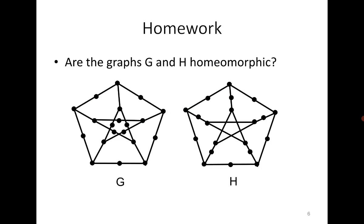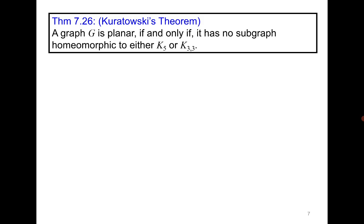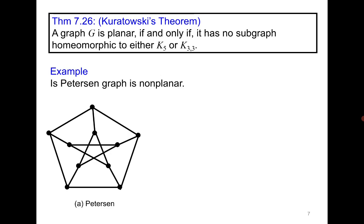This is an exercise you must try yourself. Now we move to the most important result of this chapter: Kuratowski's theorem. It states that a graph is planar if and only if it has no subgraph homeomorphic to either K3,3 or K5. We already know that K3,3 and K5 are non-planar graphs, so to prove non-planarity we must show that the graph has a subgraph homeomorphic to either K5 or K3,3.